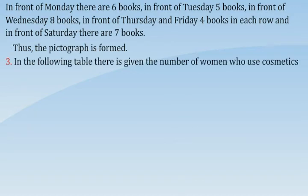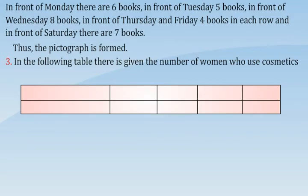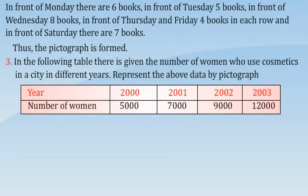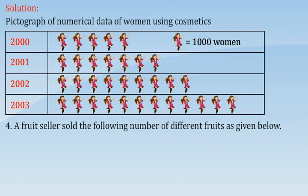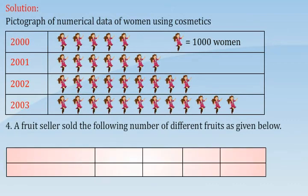In the following table, there is given the number of women who use cosmetics in a city in different years. Represent the above data by pictograph. Solution: Pictograph of numerical data of women using cosmetics. 1 woman symbol is equal to 1,000 women.